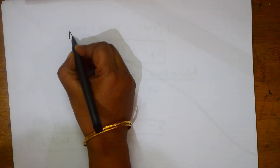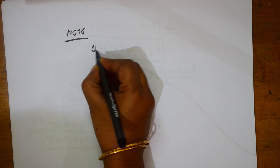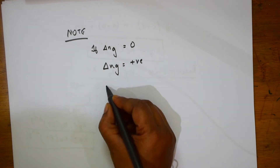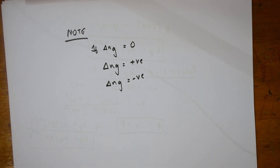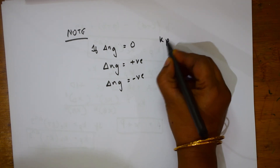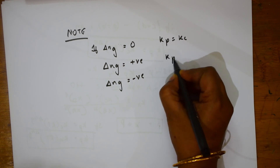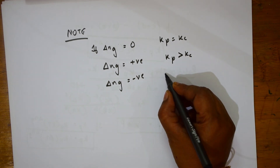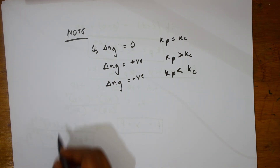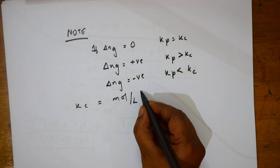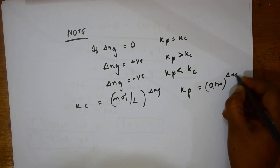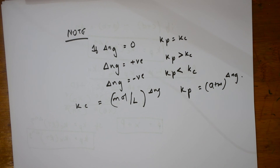Some important conditions to remember: if ΔNG = 0, then KP = KC; if ΔNG is positive, then KP > KC; if ΔNG is negative, then KP < KC. The units are: for KC, mole per litre to the power ΔNG; for KP, atmosphere to the power ΔNG. These units and relations make it easy to solve numericals.